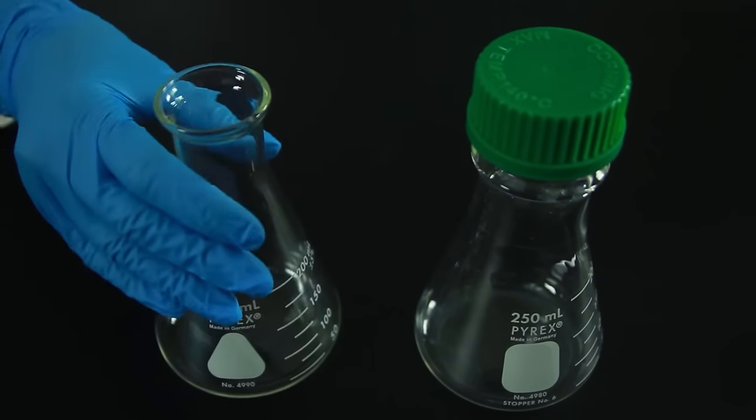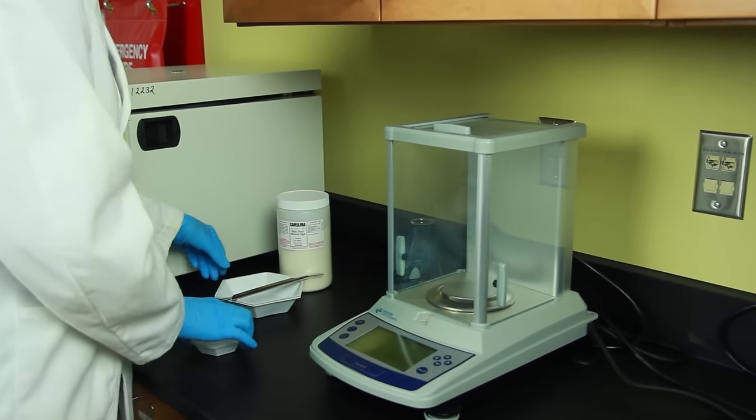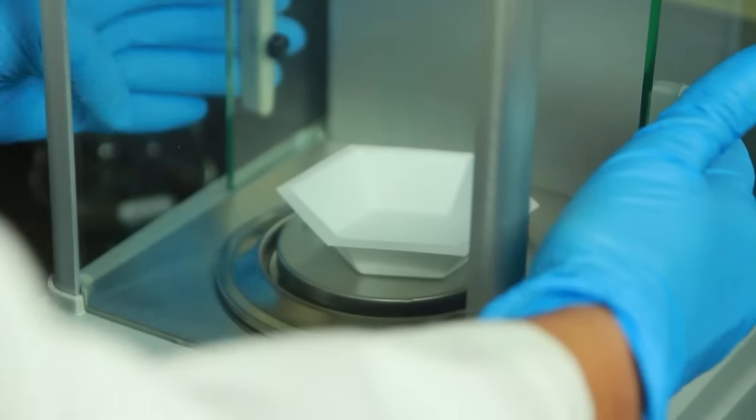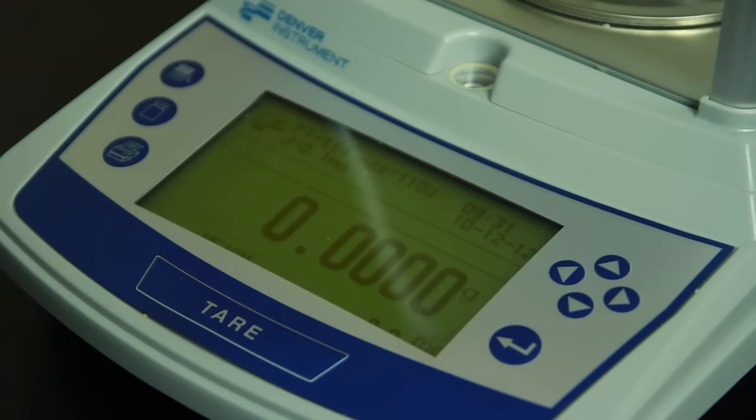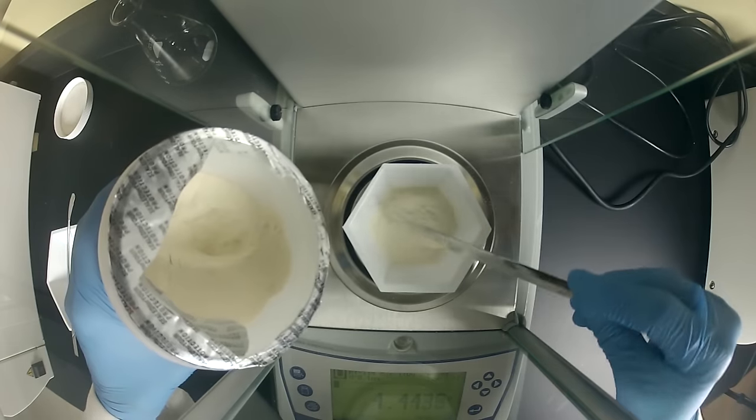Place a stir bar in a 250 milliliter flask. For the next step, we need an analytical balance. Place a weigh boat onto the balance pan. Press the tare key to zero out the weigh boat. Use a lab scoop to add 5.2 grams of brain-heart infusion agar to the weigh boat.